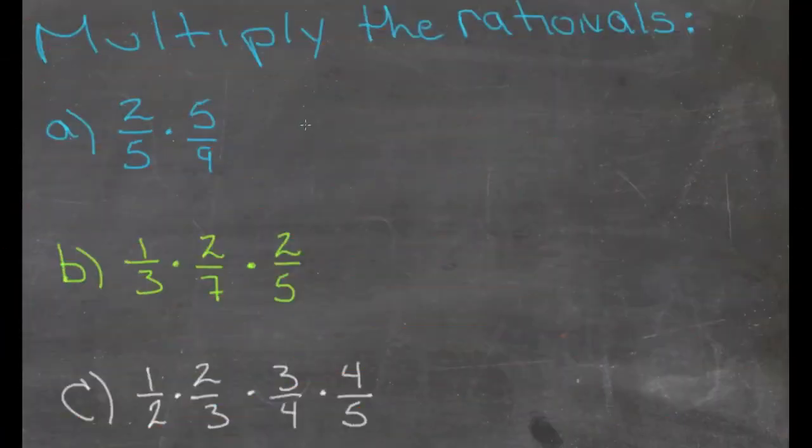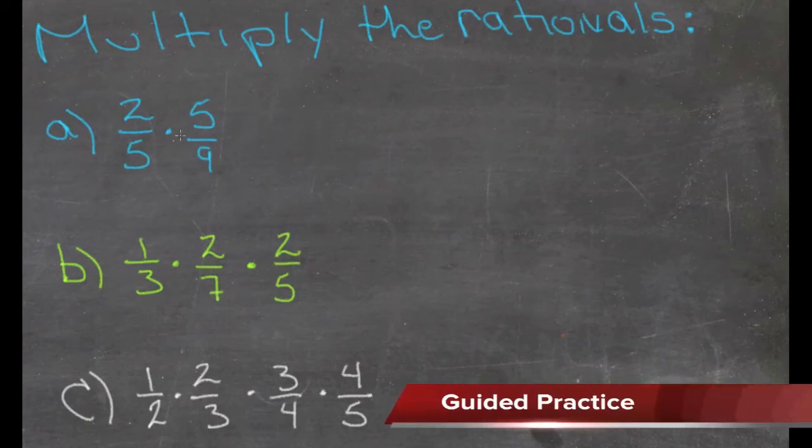I have a little bit of extra time, so I'm going to go ahead and do the guided practice on this session. We have 2/5 times 5/9. Again, we multiply straight across. We get 2 times 5, that's 10, over 5 times 9 is 45.